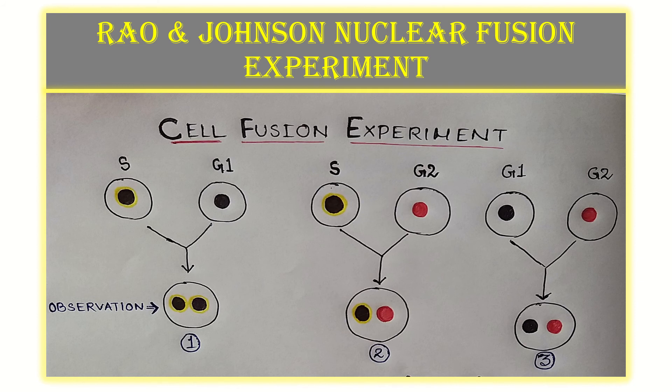Rao and Johnson had given us this famous nuclear fusion experiment which gives us a very clear idea about the status of the nuclei at different phases of the cell cycle. Here we get to see three different pictures. We will be talking about all the three pictures in the following slides.